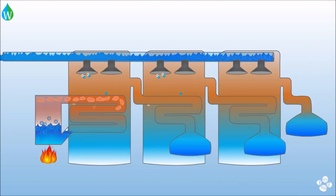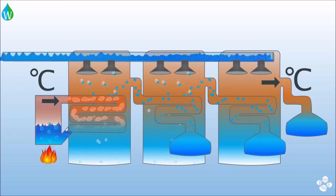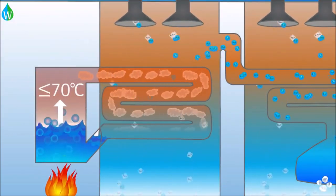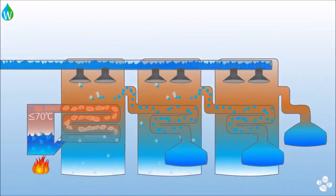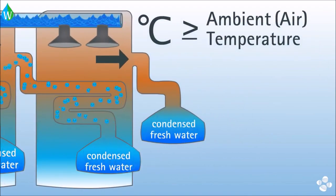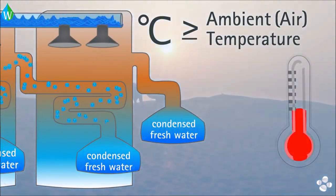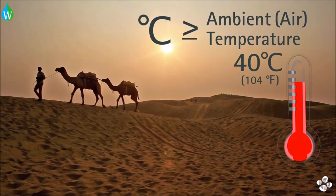Unfortunately, the process is physically limited by the first and last temperatures in the sequence. The input temperature cannot be more than 70 degrees Celsius, or minerals in the seawater will cause scaling on the pipes. The output temperature has to be at least the ambient temperature so that the water will condense. This temperature can often exceed 40 degrees Celsius in arid places, where desalination is the most needed.